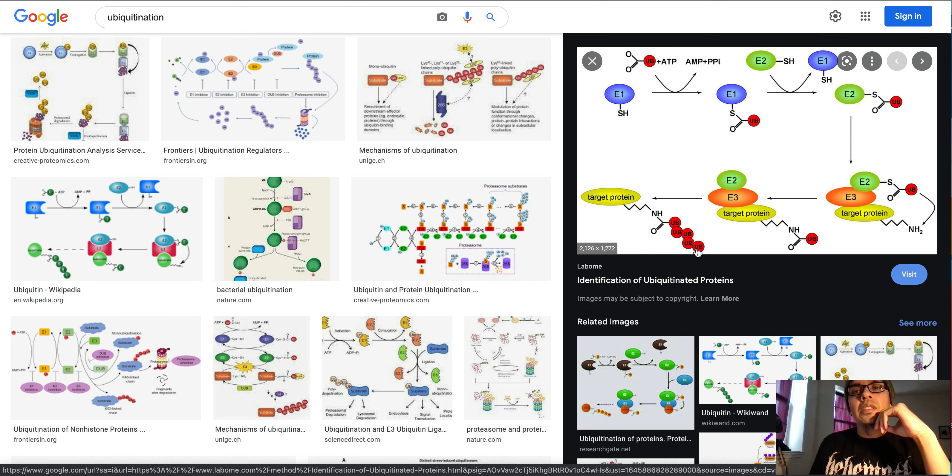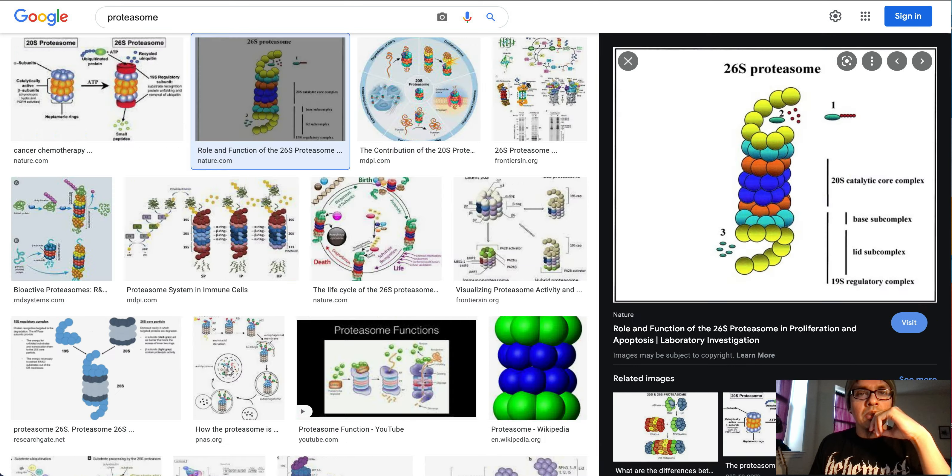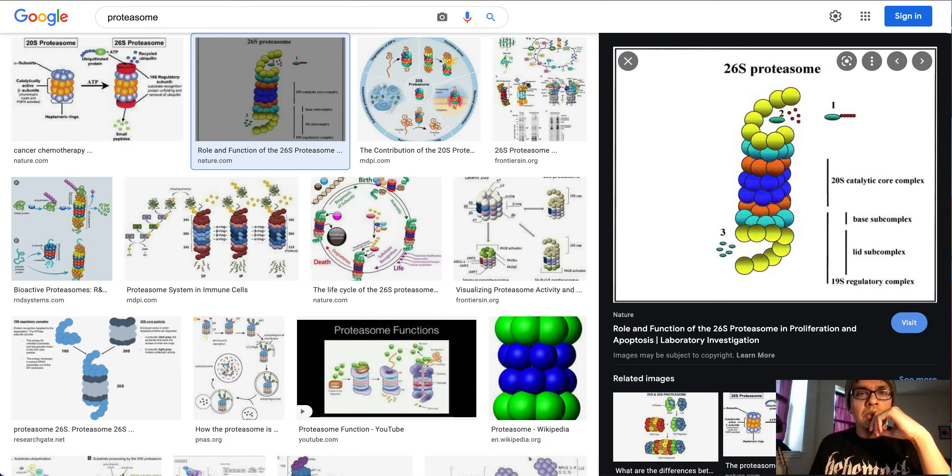Now that we have the multi-ubiquitinated protein, we come to the second part: the actual degradation. This is the guy, and to me this is kind of fascinating. This barrel-like protein here called a proteasome is the guy which is responsible for degrading the ubiquitinated target protein. Let's talk quickly about the proteasome structure.